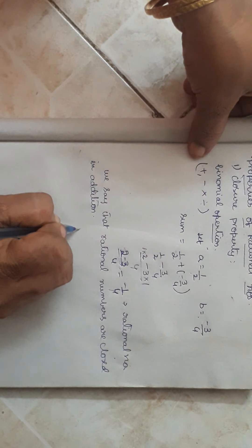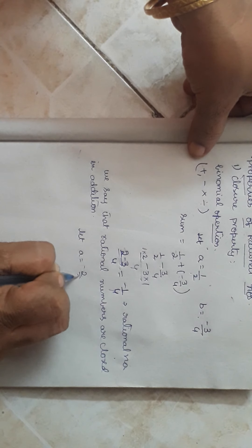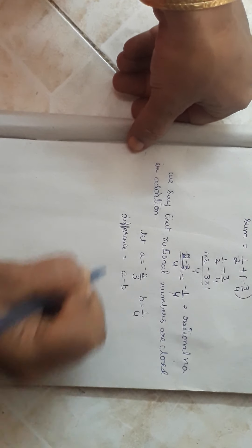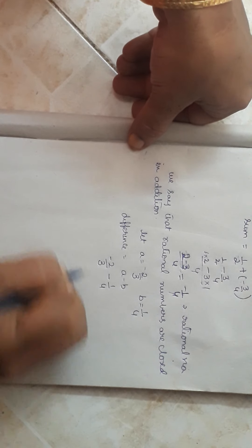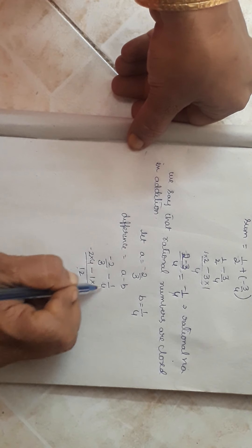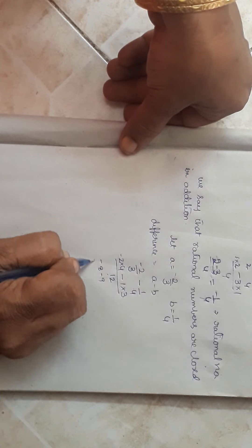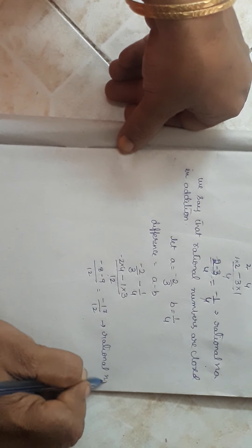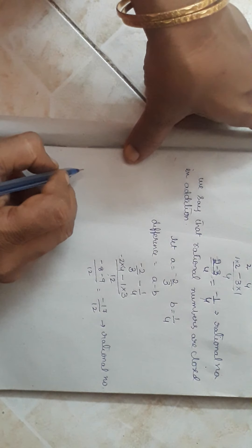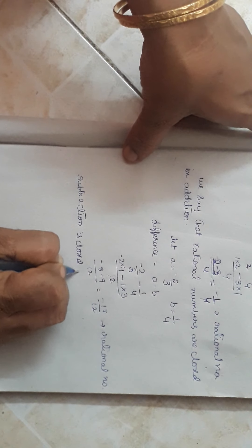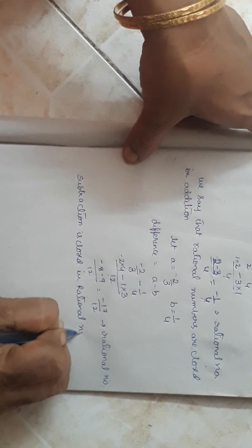Now the second binary operation — subtraction. Let a equal minus 2 by 3 and b equal 1 by 4. Let us find the difference, which is a minus b: minus 2 by 3 minus 1 by 4. The LCM is 12. This gives minus 8 minus 9 by 12, which equals minus 17 by 12. This is also a rational number, so subtraction is also closed in rational numbers.